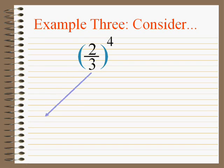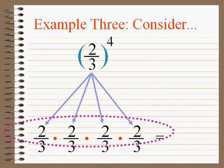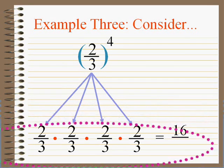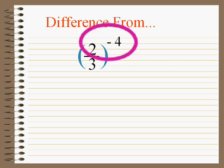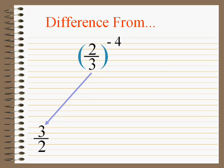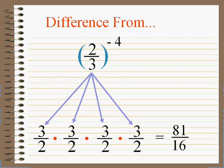Let's review something quick. Two-thirds to the fourth means two-thirds times itself four times, which equals sixteen over eighty-one. Now what is two-thirds to the minus four? Remember what negative means in the exponent position — it means reciprocate. We still use the four, but instead of two over three, we use three over two, four times. So the answer is eighty-one over sixteen — just the reciprocal. That's all the negative added in this case.